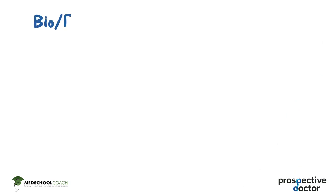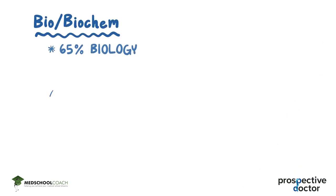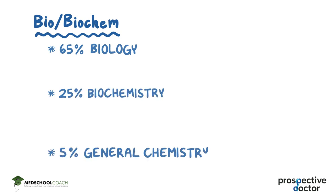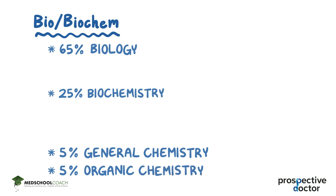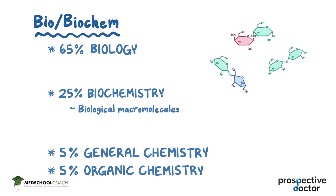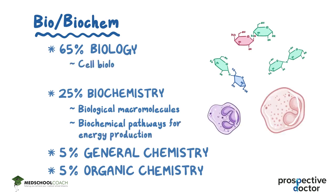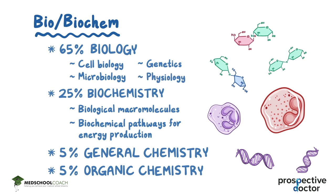Next, there's the Bio-Biochem section, which consists of 65% Biology, 25% Biochemistry, 5% General Chemistry, and 5% Organic Chemistry. Topics in this section include Biological Macromolecules like Carbohydrates, Proteins, Lipids, and Nucleic Acids, Biochemical Pathways for Energy Production, Cell Biology, Microbiology, Genetics, and Physiology.